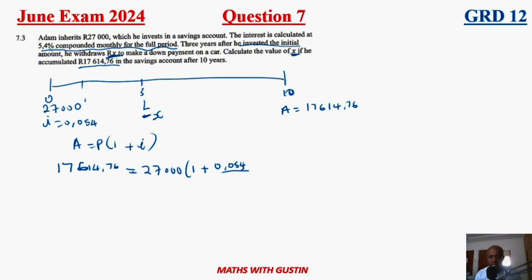Let me just double check. Is it compounded? Yes, that is compounded monthly. So the interest is compounded monthly. It's going to be interest rate split over 12 months times 10 years.